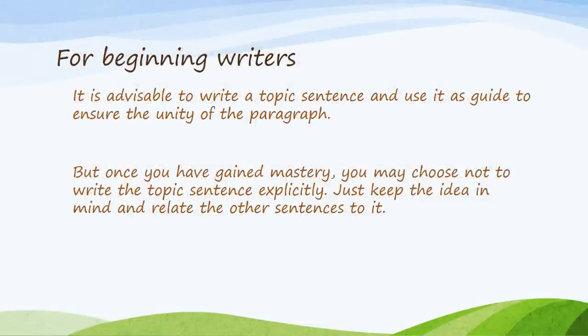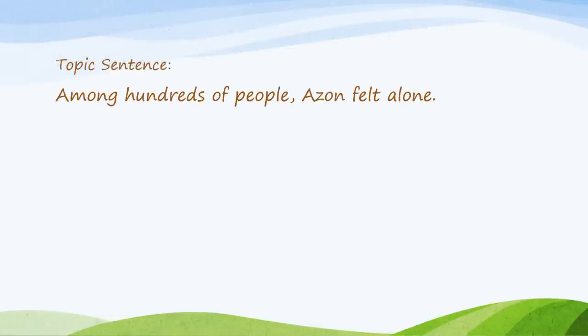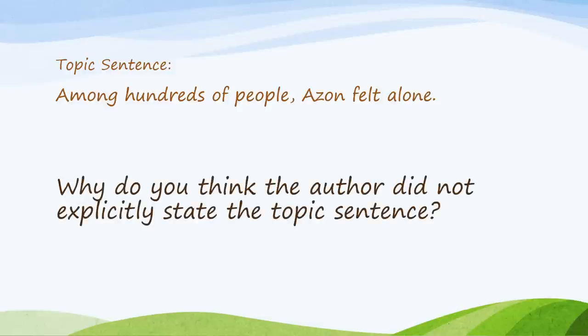If you are a beginning writer, you can use a topic sentence at the beginning of the paragraph. But once you have gained mastery, you can simply suggest or imply your topic. Here, the topic sentence is not directly stated — can you formulate it using your own words? You will find that the topic sentence is actually something like 'among hundreds of people, a zone felt alone.' This is an example of a paragraph that doesn't need to explicitly state the topic.